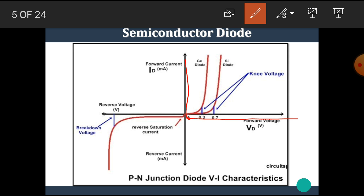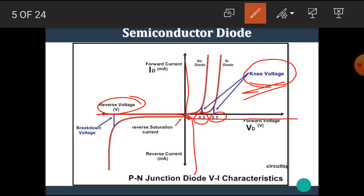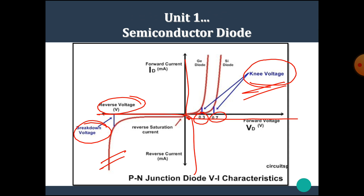This part shows the forward characteristics and this part shows the reverse characteristics. The voltage at which the diode starts conducting is known as the knee voltage. Its value for silicon diode is 0.7V and for germanium it is 0.3V. The reverse voltage at which the junction breaks down is called the breakdown voltage. One notable point is that when breakdown occurs, the diode gets permanently damaged and cannot be used after breakdown.